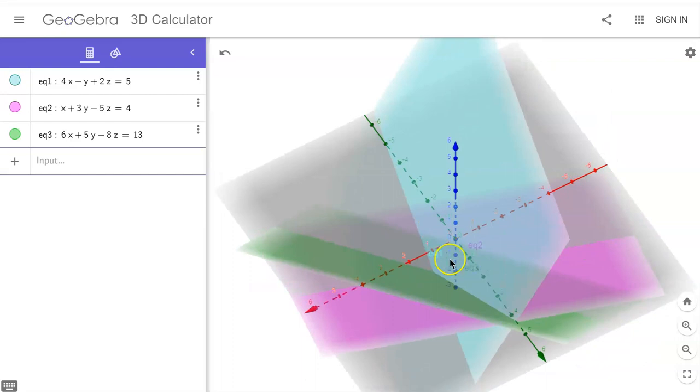So what that means is we have equations that are consistent. They do cross each other. They do all meet, but they're not unique. There isn't a unique solution. We actually have infinitely many solutions. Any point on this line where all of these planes meet would satisfy all three of these equations. So we have consistent but not unique.